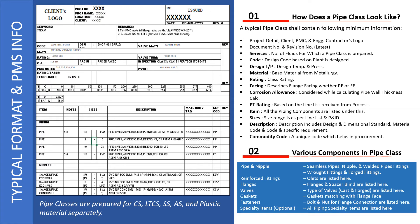Let us look at a typical format and basic PMS information which will be available in most of the PMS for all process industries, whether it is a refinery, petrochemical, fertilizer, or gas projects. The typical format or information will be nearly the same; maybe there is some additional information based on specific client requirements, but the basic information and format remain the same.